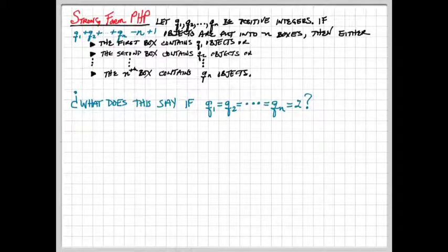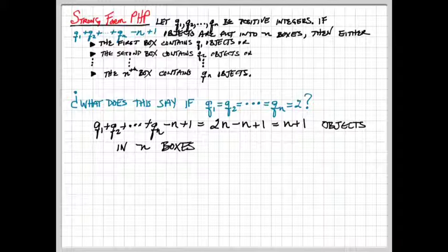Let's examine the strong form of the pigeonhole principle a little bit more closely. And in fact, what happens if we set the filling factor to 2 for every single box that we're considering? Well, the number of objects then that are being distributed is, so q1, q2, qn, those are all 2. So that would give me 2 times n. The number of boxes is n. So I subtract n plus 1, and I end up with 2n minus n plus 1. That simplifies to n plus 1 objects being distributed to n boxes.